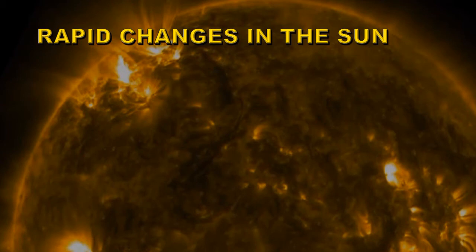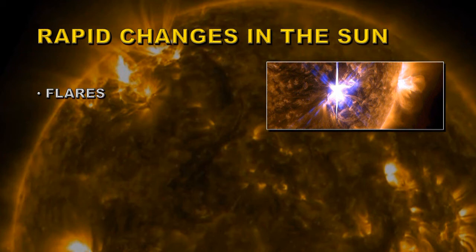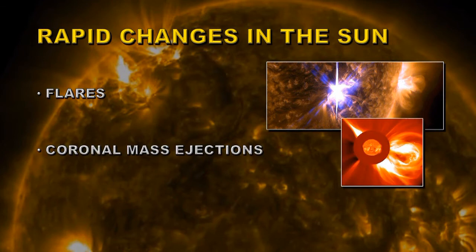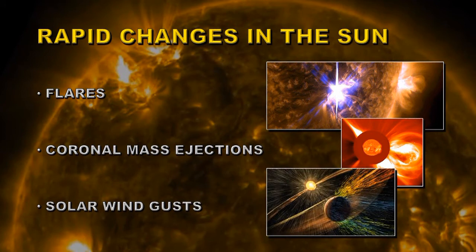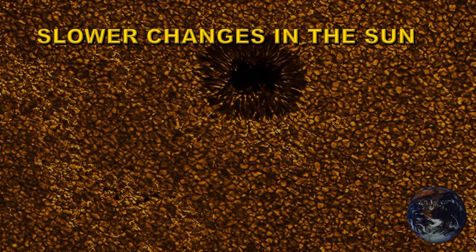Let's look at some examples of rapid changes on the Sun. One of the best known is flares — massive explosions of radiation on the Sun that stream out in all directions into space. There are also coronal mass ejections, which spew tons of material out into space; this particular explosion is larger than the Sun as it expands into interplanetary space. And then there are solar wind gusts — the solar wind is the outflow of particles from the Sun, but the rate at which it flows can change by factors of four on very short timescales, reaching up to about 800 kilometers per second.